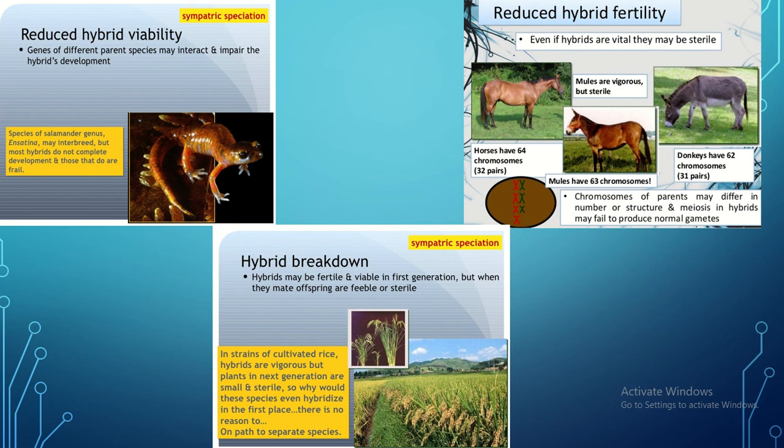The third postzygotic barrier is hybrid breakdown: the hybrid eventually breaks down over generations. A common example is strains of cultivated rice — hybrids are vigorous initially, but plants in the next generation are small and sterile. There is no reason for these species to hybridize, so after one or two generations the hybrid rice crop dies out.